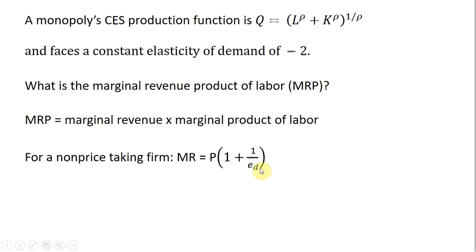In this example, elasticity of demand is constant at minus 2, so we're just going to plug that into this formula. Plugging minus 2 into this marginal revenue formula and simplifying, we get marginal revenue equals 1 half price.